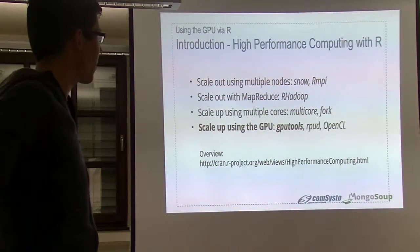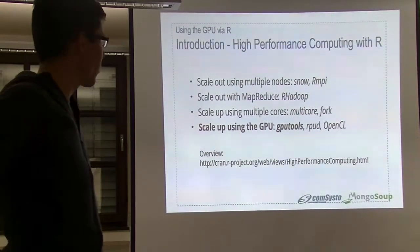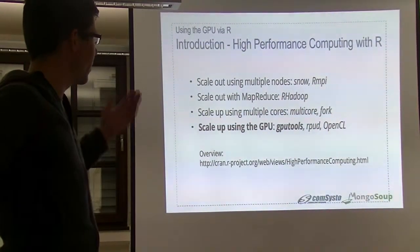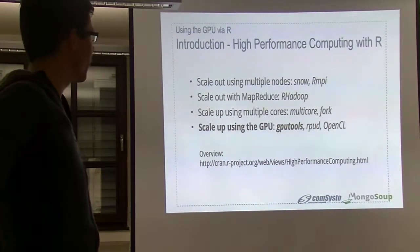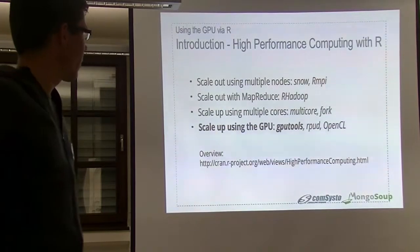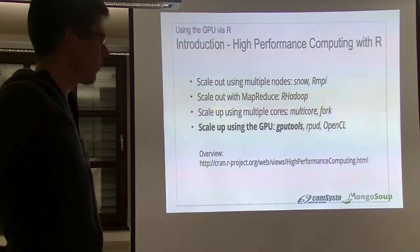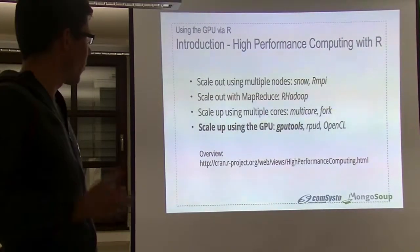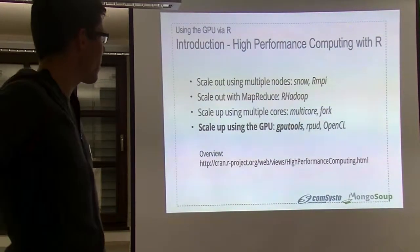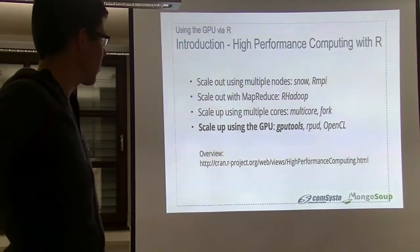I know Snow and R-MPI from five or six years ago from my work at university, and it's nearly the same as Hadoop — you have to do more manually. With Hadoop, you have some automation. If you use only your laptop, you can use packages on one node, like Multicore or Fog, where you can parallelize some tasks.